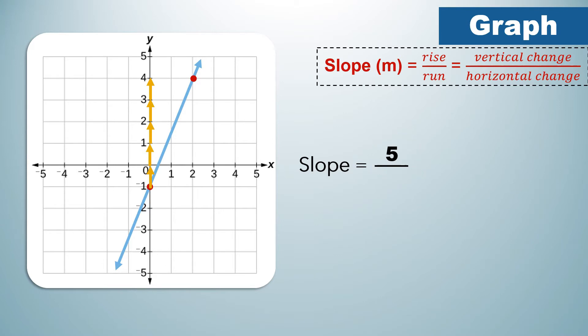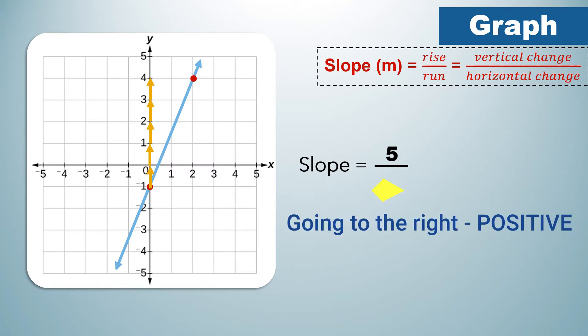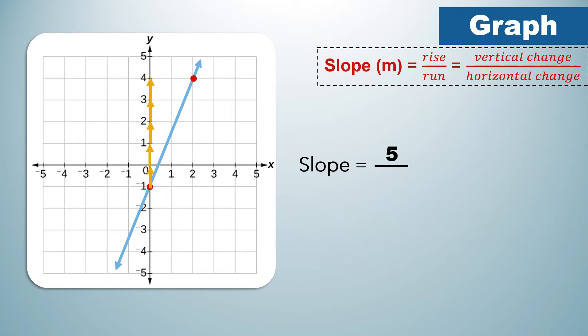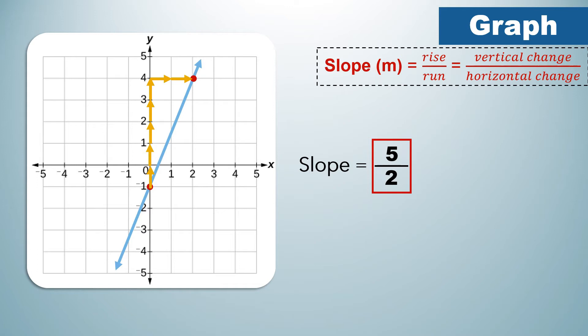To count for the horizontal change, please take note that if the direction of the line is going to the right, the slope is positive. But if the direction of the line is going to the left, the slope will be negative. Since the direction of this line is going to the right, the slope is positive. Let us count the run: 1, 2. So the denominator is 2. Therefore, the slope of this given line is 5 over 2.